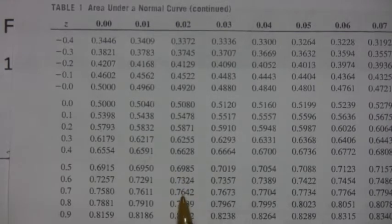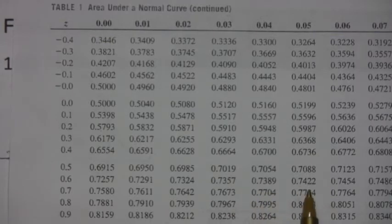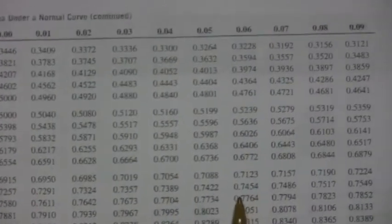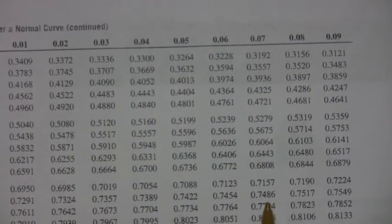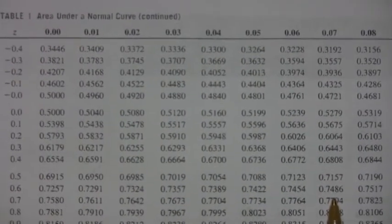So I'm looking through here in the body of the table, 0.7486. There it is. That's the closest number in the table to what I'm looking for.